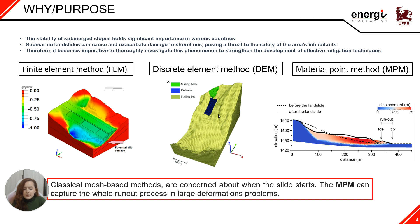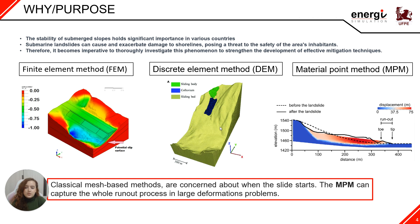Classical mesh-based methods, such as the finite element method, are normally concerned about when the slide starts, but it's difficult to capture the whole run-out process due to the potential severe mesh distortions and large deformation. The discrete element method is able to simulate soil flows, but its utilization may be restricted due to a prohibitive computational cost. The advantage of utilizing the material point method is that it's possible to model large displacement problems and observe the displacement behavior throughout the whole run-out process.